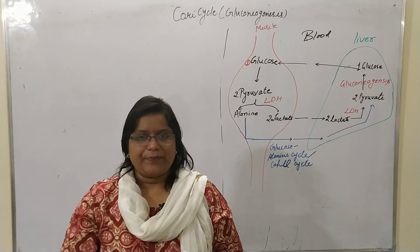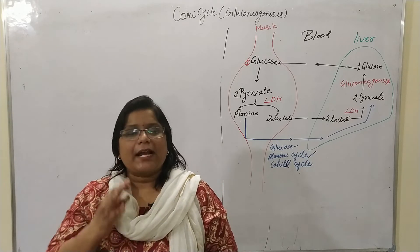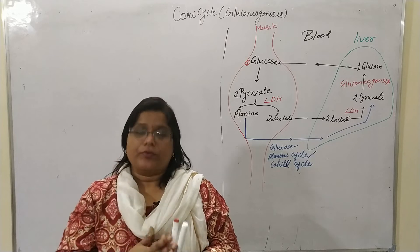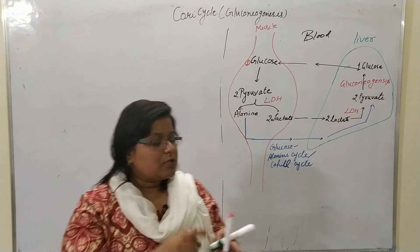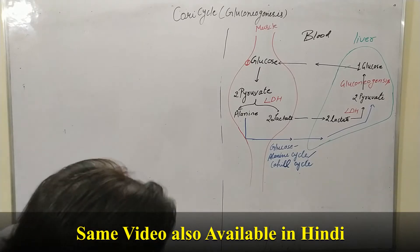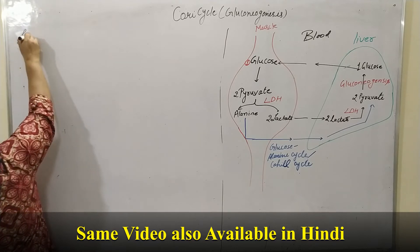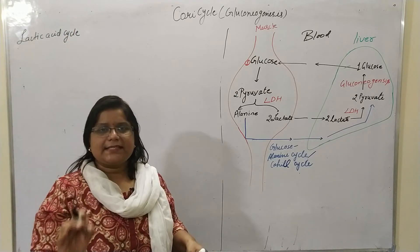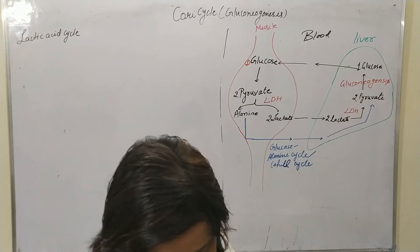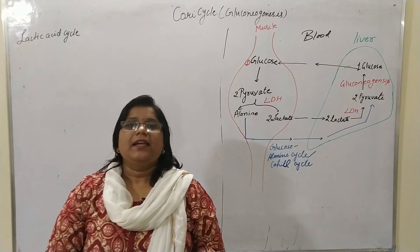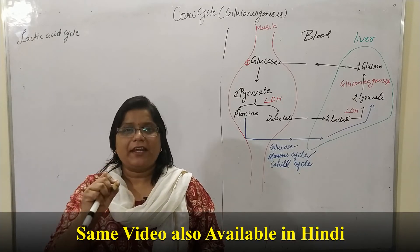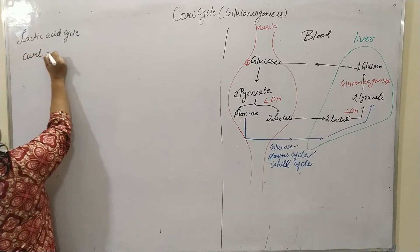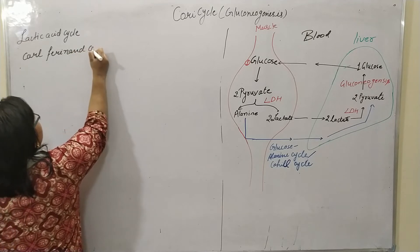Today we are going to discuss the Cori Cycle. The Cori Cycle means the formation of lactic acid into glucose, so this cycle is also termed the lactic acid cycle. The main substrate for gluconeogenesis is lactic acid, or lactate. This cycle was discovered by Carl Ferdinand Cori and Gertie Cori.